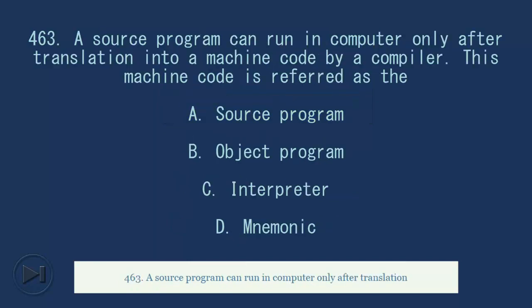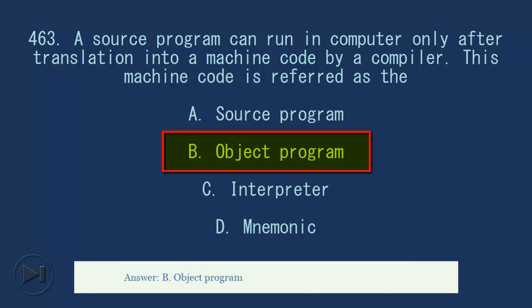463. A source program can run in computer only after translation into a machine code by a compiler. This machine code is referred as the A. Source program. B. Object program. C. Interpreter. D. Mnemonic. Answer, B. Object program.